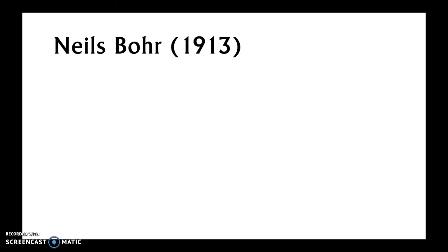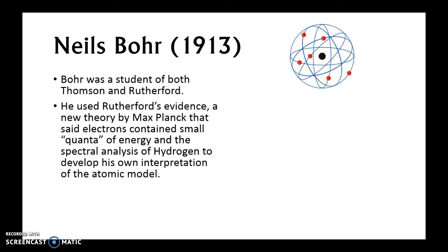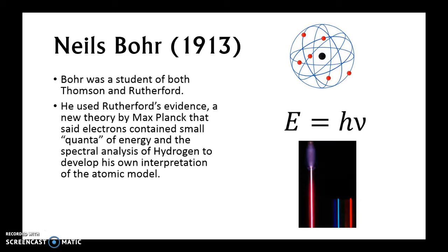Next is Niels Bohr. Bohr was a student of both Thompson and Rutherford, so he was very familiar with both of their work. He used Rutherford's evidence and Max Planck's new theory — that electrons should emit quanta of energy — along with spectral analysis of hydrogen to develop his own interpretation. He used the equation E = hν (energy equals Planck's constant times the frequency of the wave) and hydrogen spectra observed from stars.